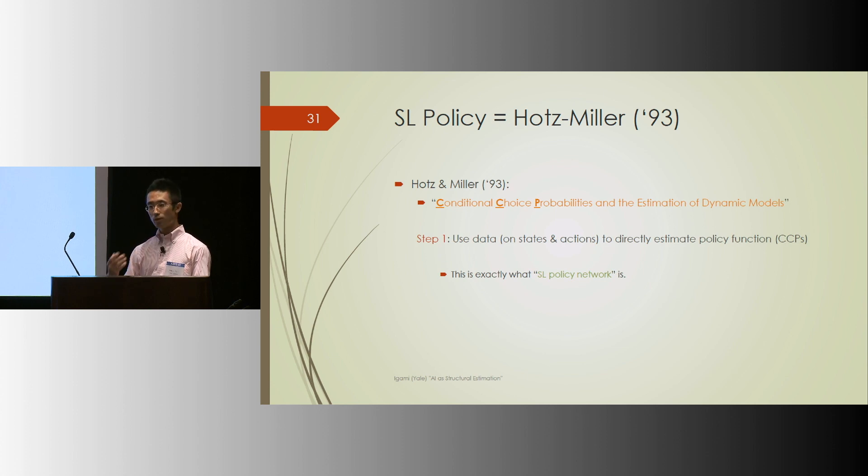This part of AlphaGo is the same as Hotz-Miller 93, who proposed a two-step estimation approach that sidesteps the solution of dynamic programming problems. And that is, you can look at the data on actions and states, actions and states, to estimate the policy function, ideally non-parametrically, or conditional choice probabilities. And that's their first stage. And that's exactly how the supervised learning policy network is constructed. So that's component one.